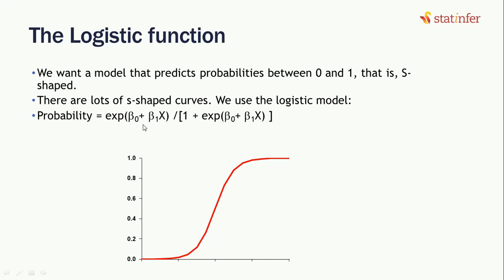If we look at here, beta 0 plus beta 1 x1 is our linear regression line. If we have converted some mathematical operations, we have converted it into giving us outcomes between 0 and 1, which are probabilities.